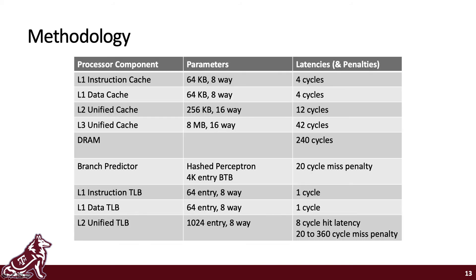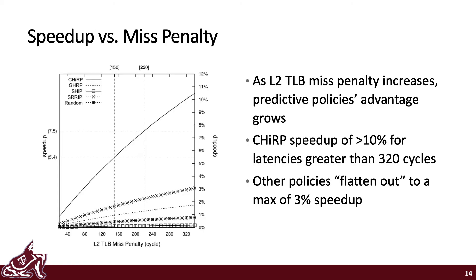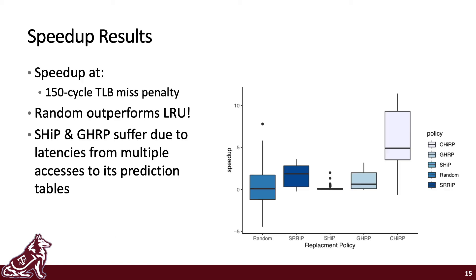The hardware configuration we simulated is shown in this table. Most of interest is the CHIRPified L2 Unified TLB, where we varied the TLB miss penalty from between 20 to 360 cycles. The left-hand plot shows the speedup results over LRU for these varied L2 TLB miss penalties. Note that as the L2 TLB miss penalty increases, so do the speedups offered by predictive policies. CHIRP's speedup value increases the fastest, surpassing 10% for latencies greater than 320 cycles, not out of the realm of possibility given computing workload trends.